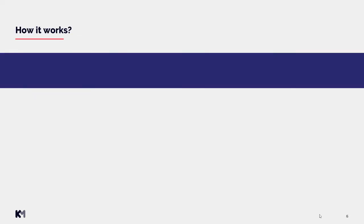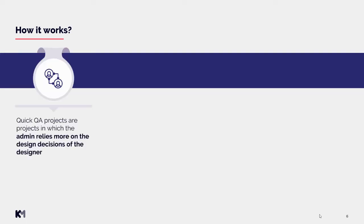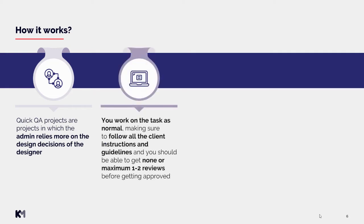Now you might wonder how it works from the designer perspective. Quick QA projects are projects in which the admin relies more on the design decisions of the designer. You work on the task as normal, making sure to follow all the client's instructions and guidelines, and you should be able to get none or a maximum of one to two reviews before getting approved.